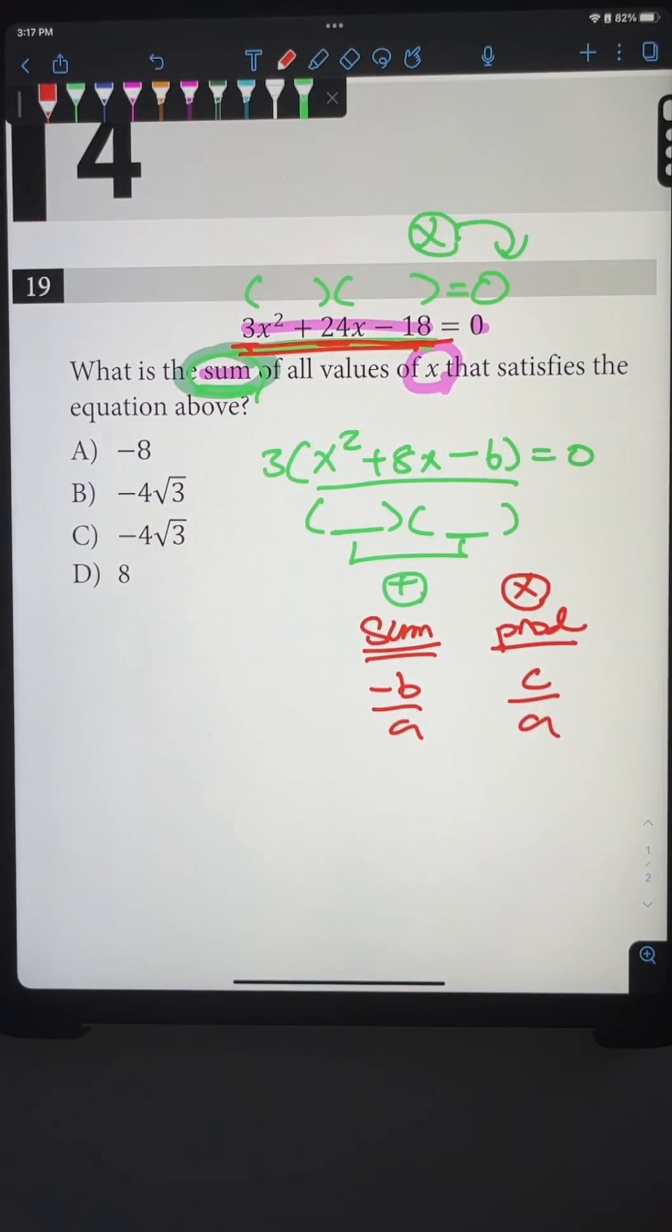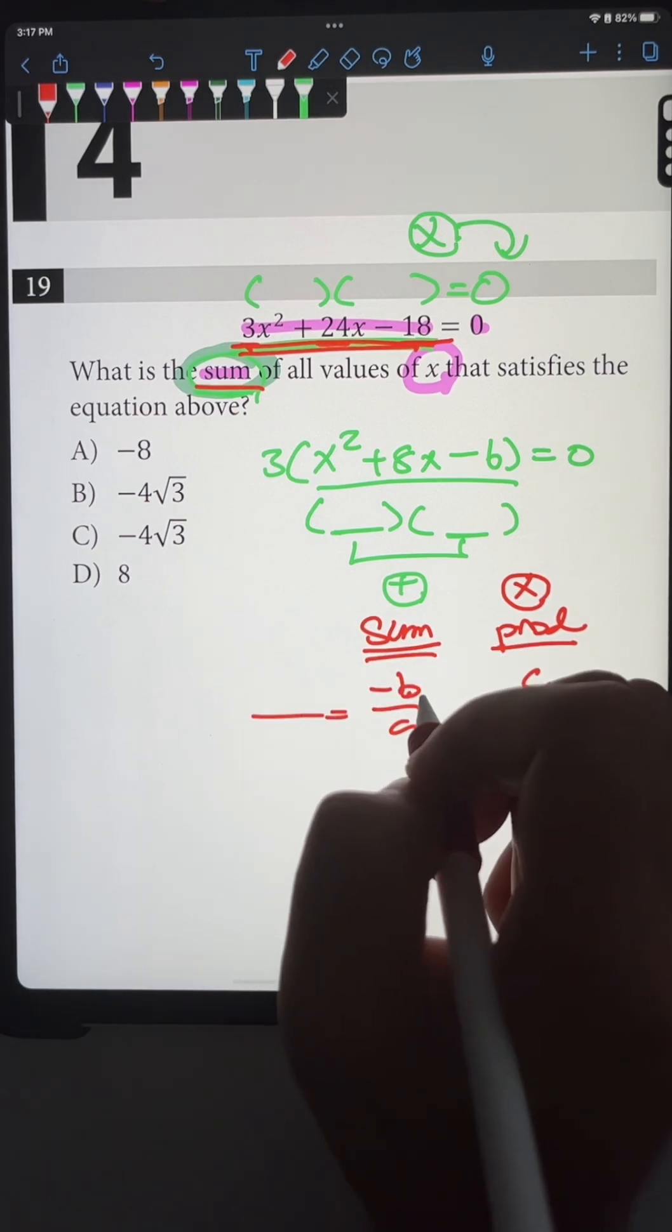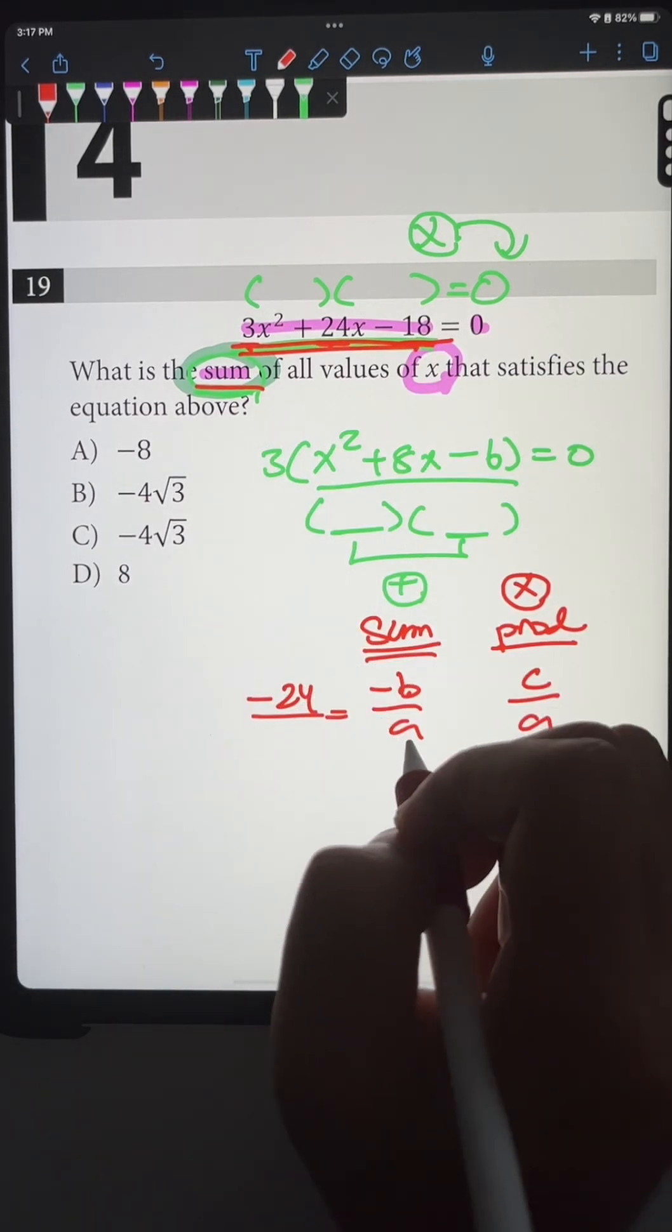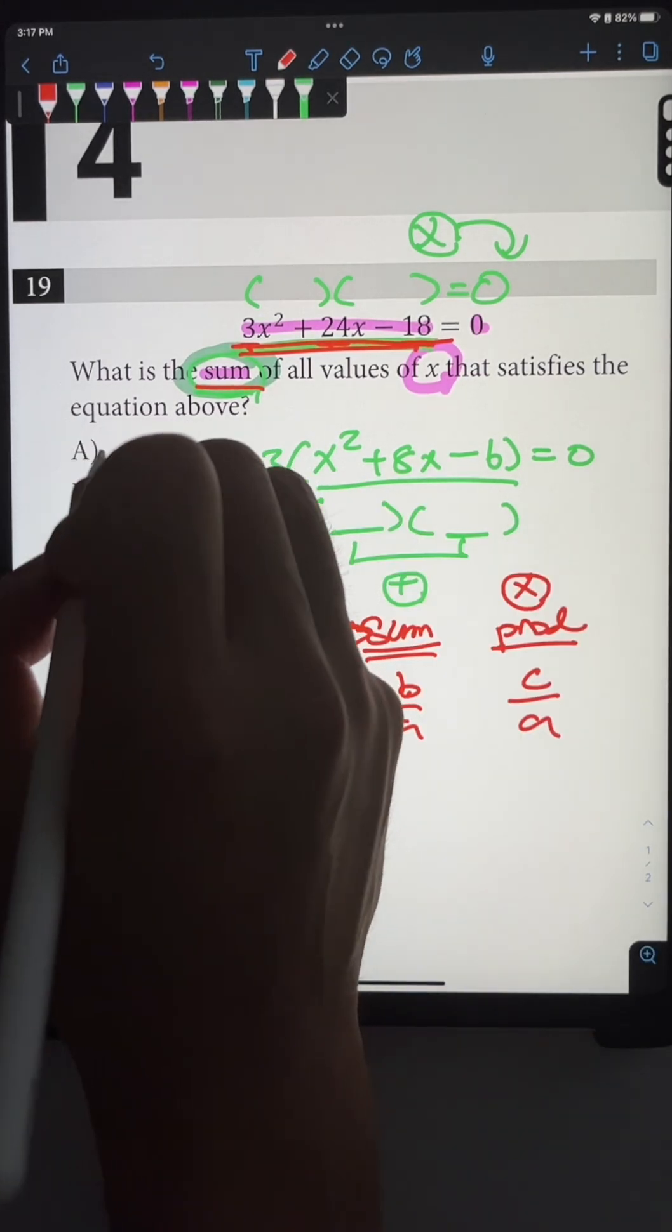So in order to find the sum of the x's, all we have to find is the b value, a value, and just plug it in. So what's our b value? b is 24. So negative 24, a value is 3, which means our answer is going to be -8. The sum of the x values is -8.